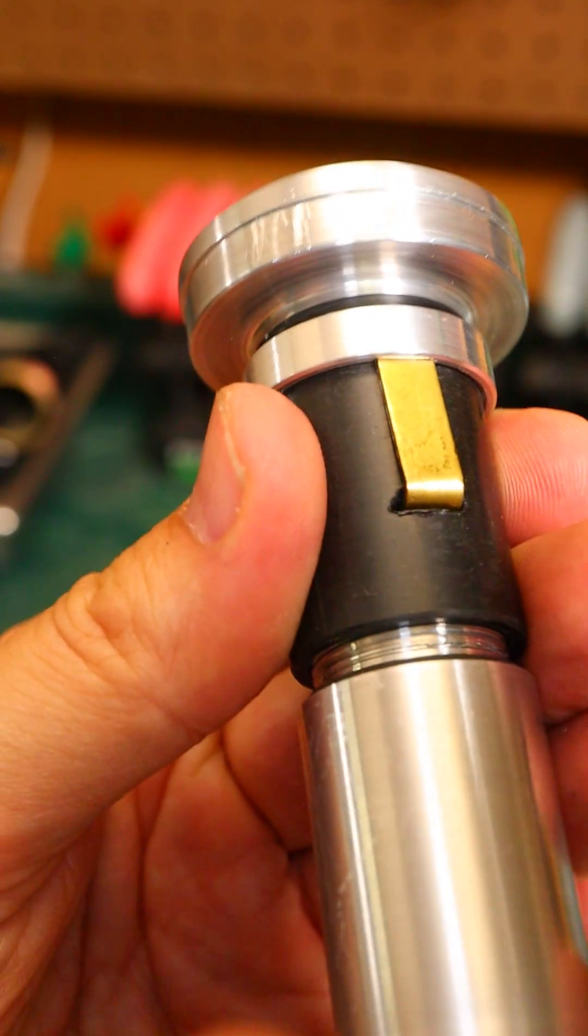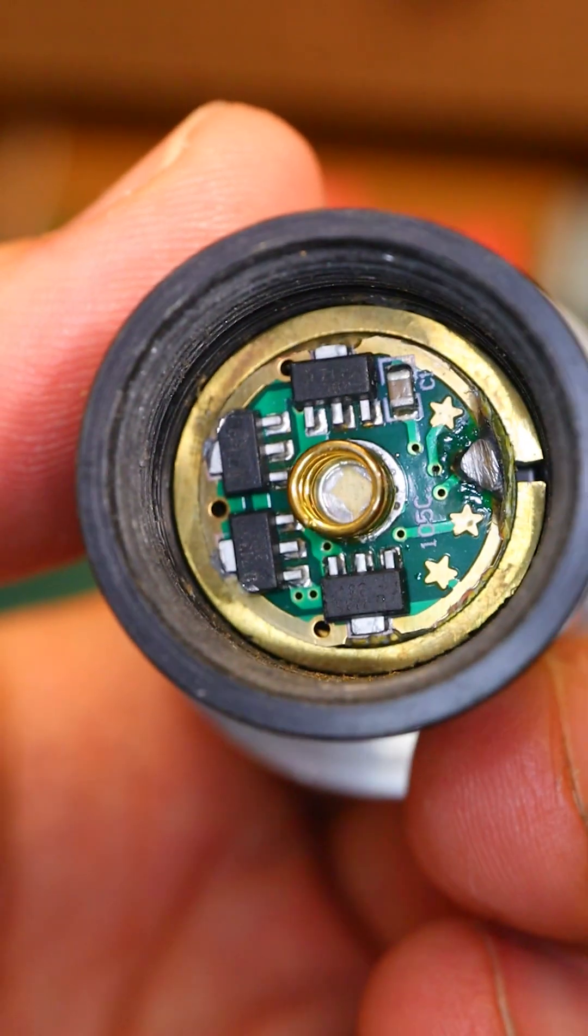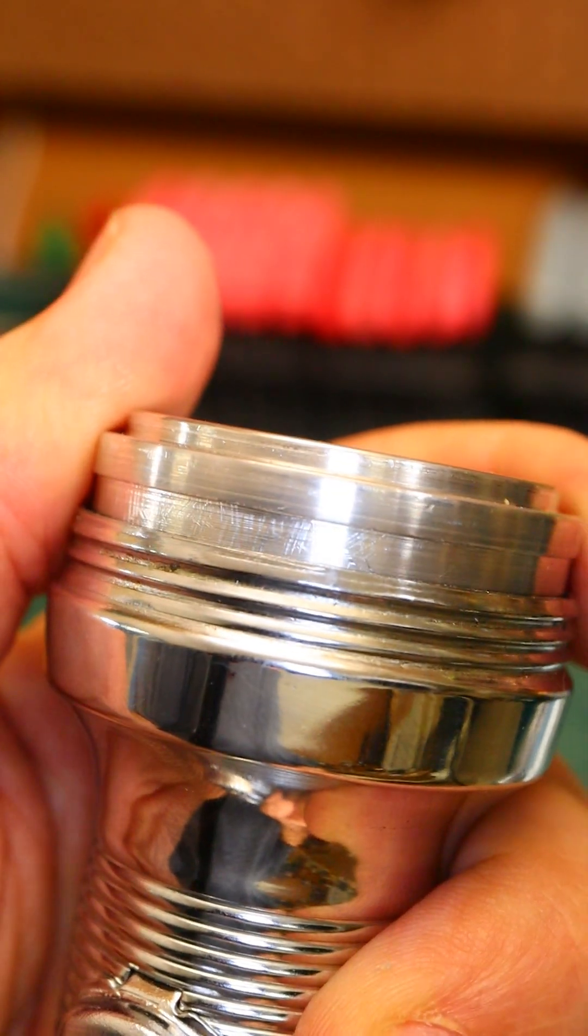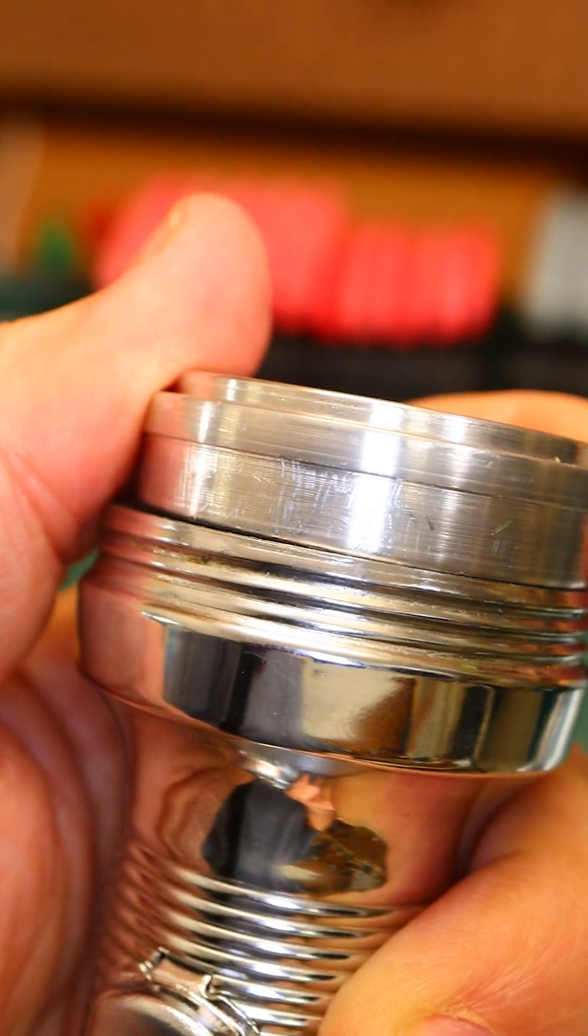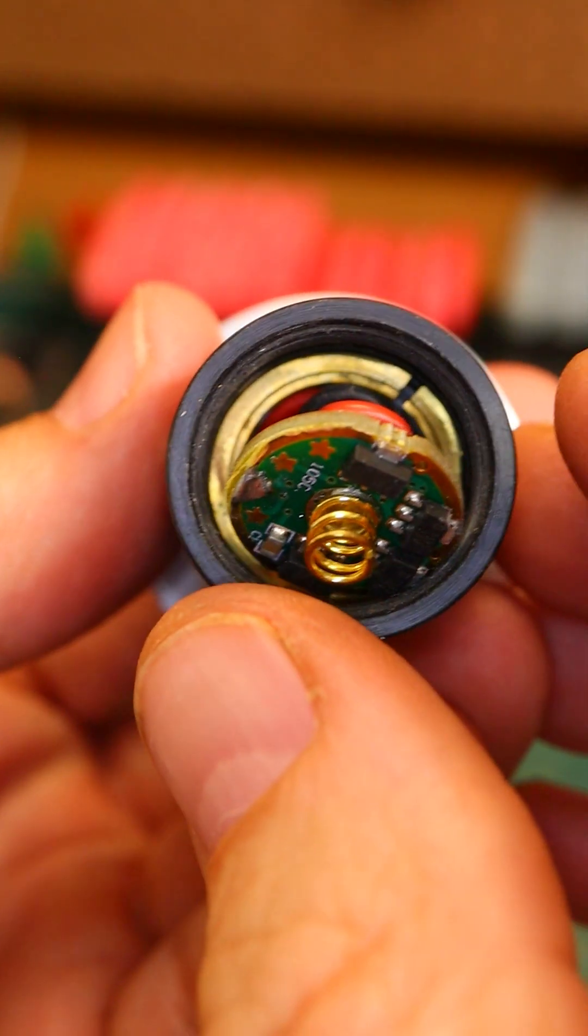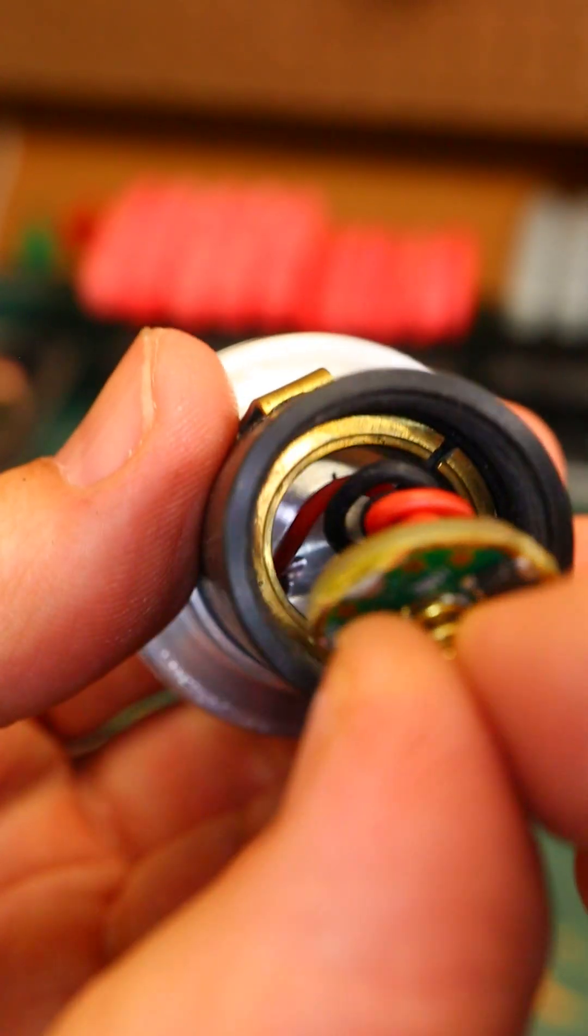What I prefer to do instead is electrically isolate the driver. I build the upper portion of the light engine so it mates with the head and body of the host to transfer heat away from the LED. The driver is isolated from the top portion of the engine by a layer of high temp plastic.